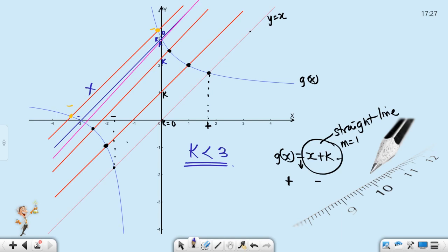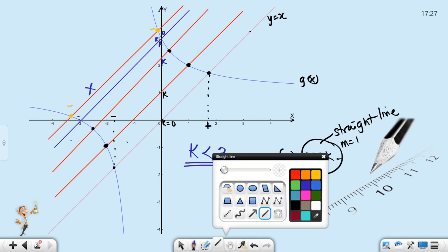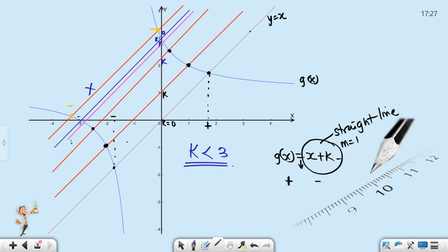Hope it makes sense. That's how to deal with your roots. Just understand that roots are point of intersection of two functions. So as long as your k falls below three, then we're done. We have a positive and negative root. I'll see you later.